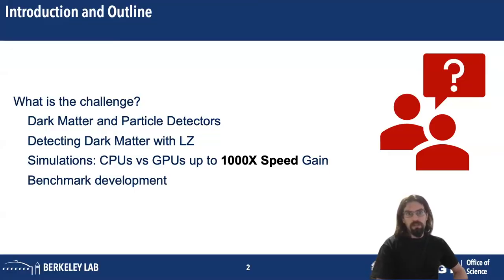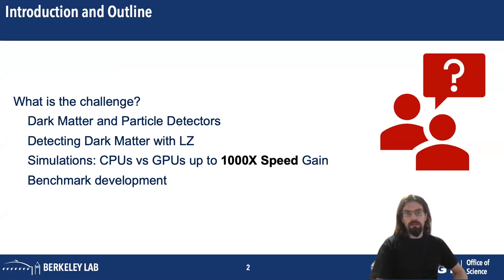My talk has three major components. I will start by talking about the challenge that we face in this role. I'm going to talk about what dark matter is and how particle detectors are used to pick it up. Then I'm going to talk specifically about the configuration of the LZ experiment, which I am supporting. I'm going to talk about the role simulations play within this project and how the difference between CPU-based simulations currently used and the GPU-based simulations we're implementing will lead to a potential for 1000x speed gain.